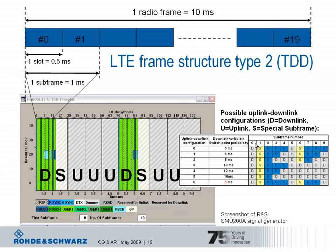The table shows seven possible uplink-downlink configurations defined for TDD. For each subframe of a radio frame, it is indicated whether it carries a downlink — denoted by D — an uplink — denoted by U — or a special subframe — denoted by S. There are also configurations with a downlink-to-uplink switchpoint periodicity of either 5 or 10 milliseconds to select from.